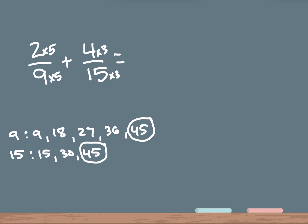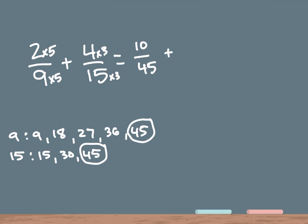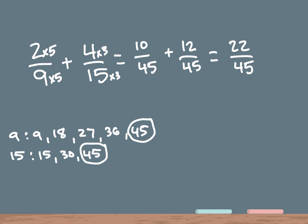So now let's rewrite our problem. The first fraction is 2 times 5 is 10 over 9 times 5 is 45, plus 4 times 3 is 12 over 15 times 3 is 45. Now we add the top two numbers: 10 plus 12 is 22 over 45. The answer to our second problem is 22 over 45, and it is in its simplest form.